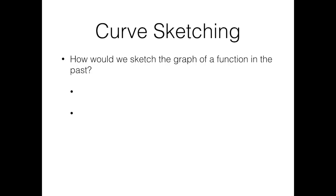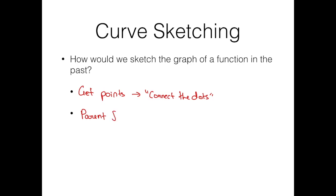Well, there's two different ways I can think of. One is we would get points and then sort of connect the dots. So we'd plug in several different x values and we'd get out some y values and really just sort of connect the dots between them. That's one way you might have learned maybe back in Algebra 1. The next thing we would do is we would find a parent function, and then we'd make transformations.